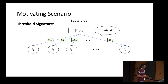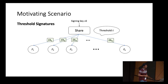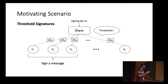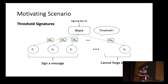Let's fix the threshold parameter to be T. The sharing algorithm sends the i-th share SHI to party PI. We require two properties from threshold signatures: any group of T or more parties can come together and generate a signature on a message, and the security property is that any group of T-1 parties cannot forge a signature.